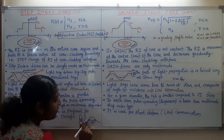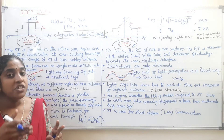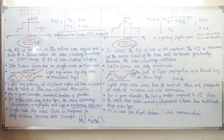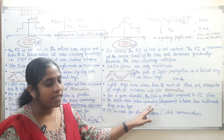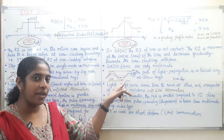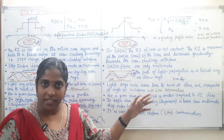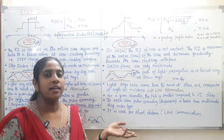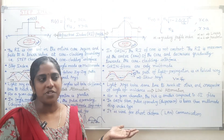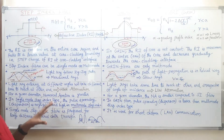In multi-mode step index fiber, there are more ray paths, and pulses can overlap at the other end, so dispersion losses are higher compared to single mode step index fiber. In graded index fiber, pulse spreading is lower than in multi-mode step index fiber because all light rays reach the other end simultaneously. Even though there is no time delay, there can be some other losses due to variation in the wavelength of light, known as material dispersion — but that is a more detailed topic related to losses in optical fiber.